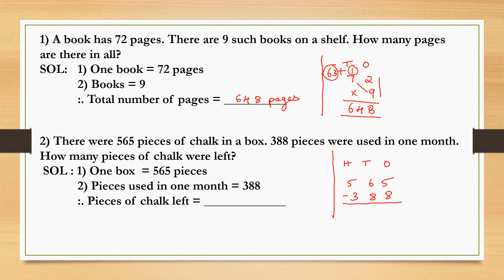Let's write 565 minus 388. 5 minus 8, it's not possible. Move to the 10s place. And here it is 5 and can bring borrow 1. So it is 15. 15 minus 8 is 7.